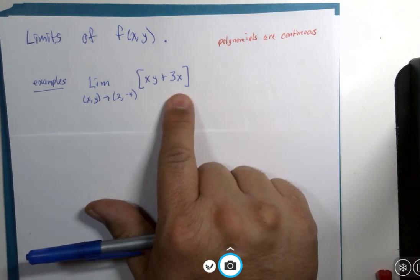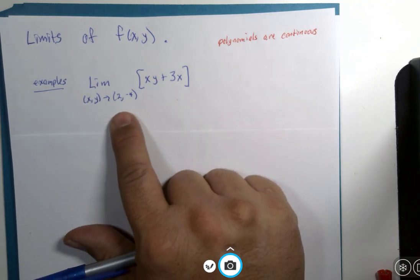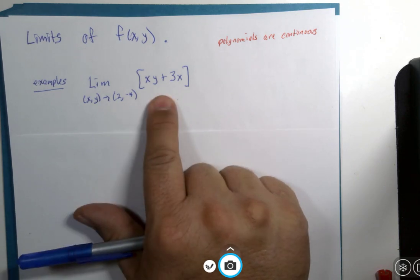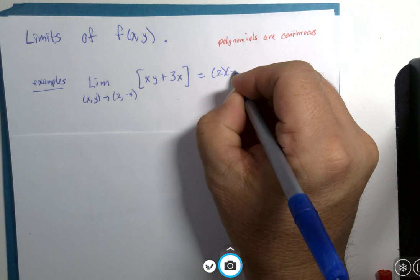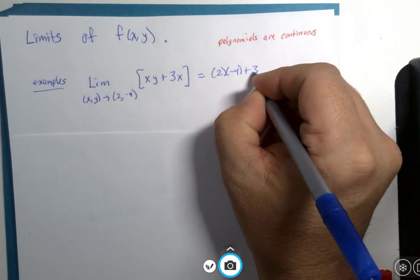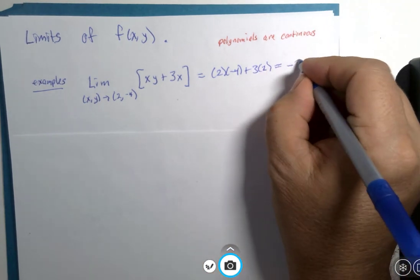But if this is a polynomial, we would just simply try to substitute the values of 2 and negative 4 into this function. So that's 2 multiplied by negative 4 plus 3 multiplied by 2, so negative 8 and 6 is negative 2.